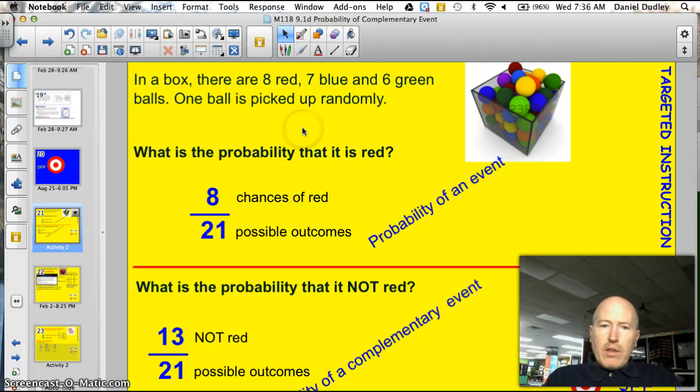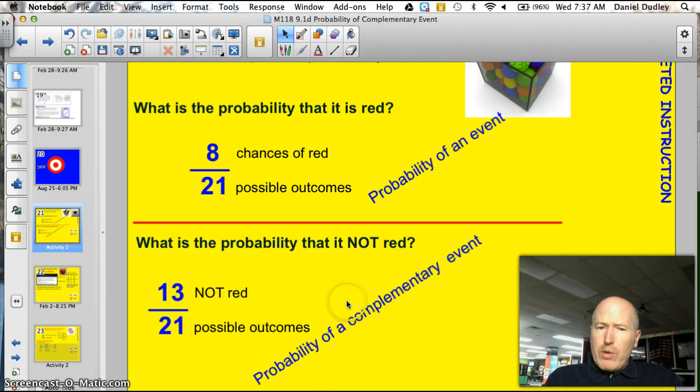Alright, here's a box. There are eight reds, seven blue, and six green balls in it. One ball is picked up randomly. What's the probability that it is red? Well, we've got eight red balls, and there's a total of 21. So we have a total of 8/21. That's the probability of the event. What's the probability that it's not red? This is the probability of the complementary event. So there's eight chances of it being red, and there are 13 chances out of 21 that it won't be red. So tonight we'll be focusing on the complementary event. In order to do that, we really have to look at the event itself as well.